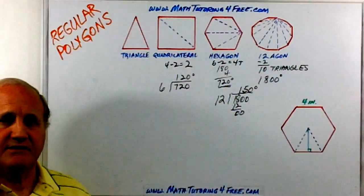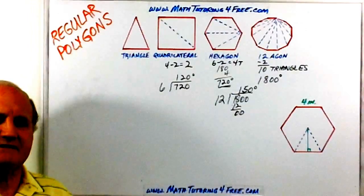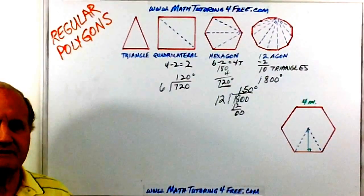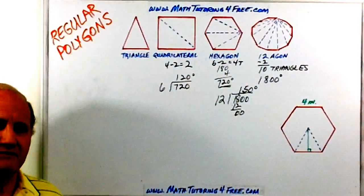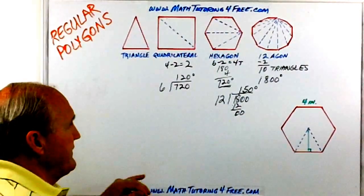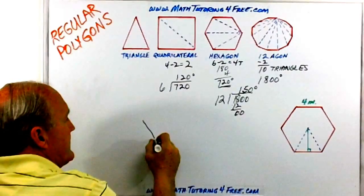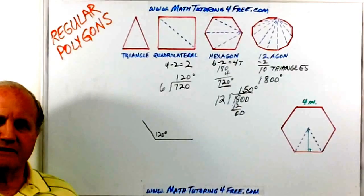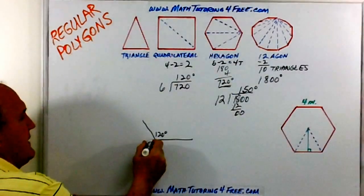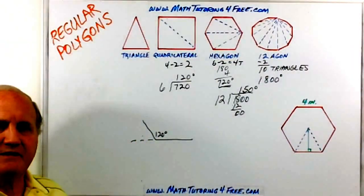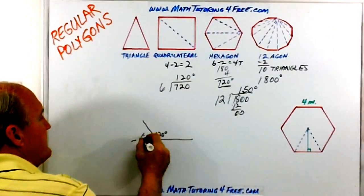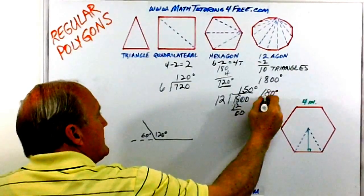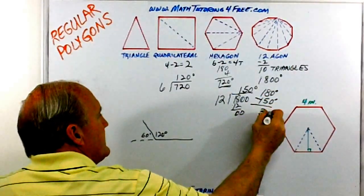It's easy to calculate — just remember the number of triangles is two less than the number of sides. Rather than memorizing a formula, think through the process. For the hexagon with each internal angle of 120 degrees, the external angle is the supplement: 180 minus 120 equals 60 degrees. For the 12-agon, the external angle would be 180 minus 150, so 30 degrees.